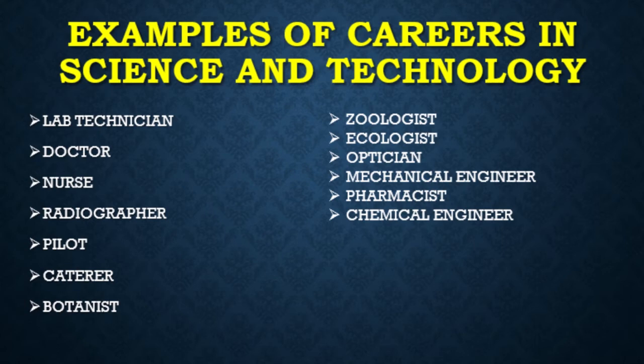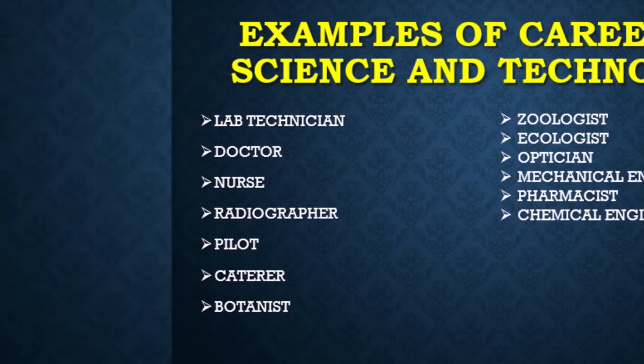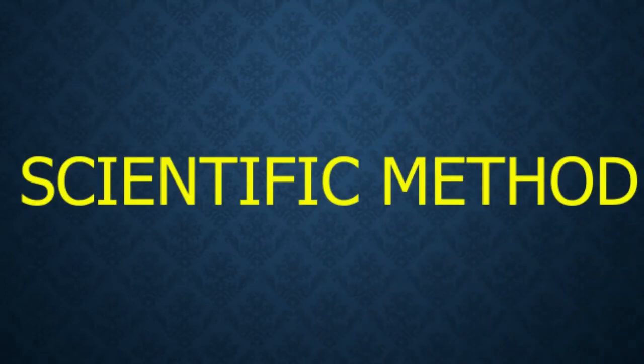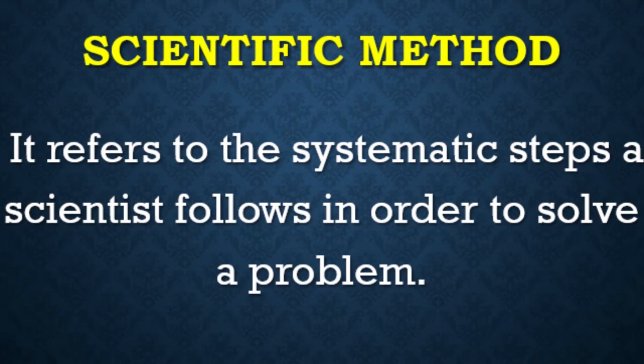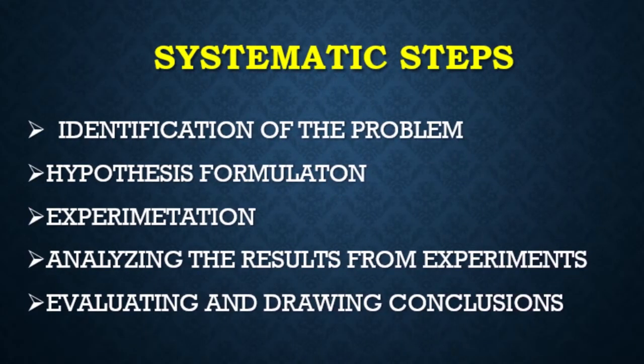Let's look at how a scientist operates and what methods they use in solving a problem — this is what we term the scientific method. The scientific method refers to the systematic steps a scientist follows in order to solve a problem. The steps are: one, identification of the problem; two, hypothesis formulation; three, experimentation; four, analyzing the results from experiments; and five, evaluating and drawing conclusions.